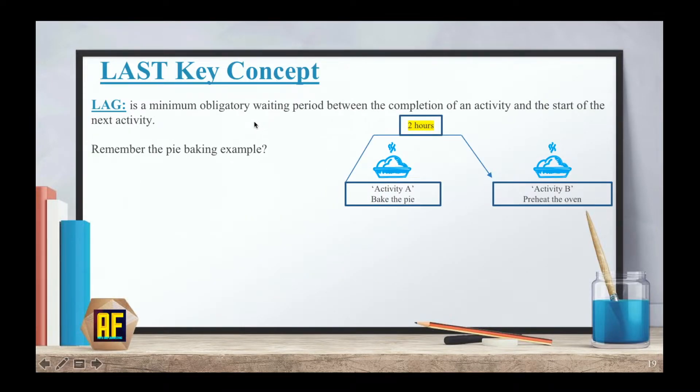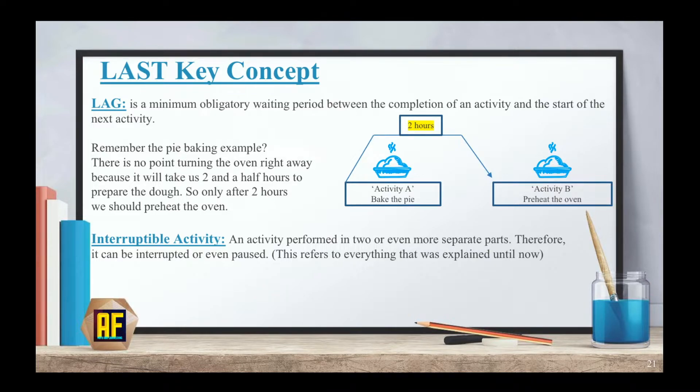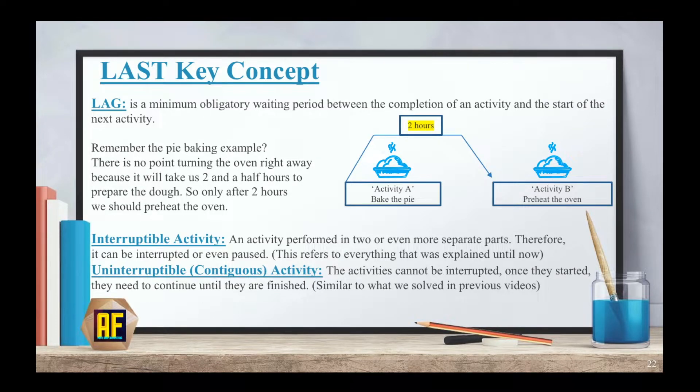The last key concept: lag is a minimum obligatory waiting period between the completion of an activity and the start of the next activity. Remember the pie baking example? There is no point turning the oven right away because it will take us two and a half hours to prepare the dough. So only after two hours we should preheat the oven. Interruptible activity is an activity performed in two or even more separate parts. Therefore it can be interrupted or paused. Uninterruptible or contiguous activity is the activities that cannot be interrupted. Once they started they need to continue until they are finished.